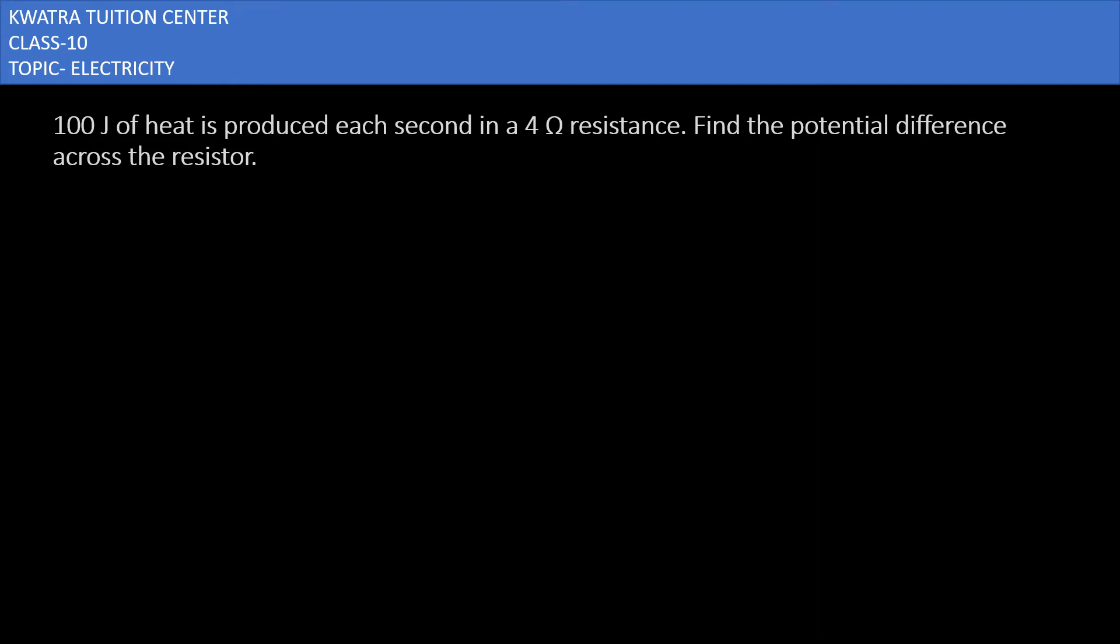Let's start with a new version. It says 100 joule of heat is produced each second in a 4 ohm resistance. Find the potential difference across the resistor.